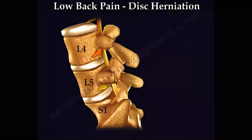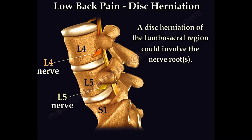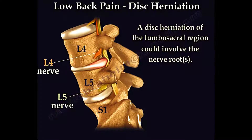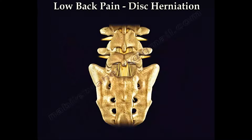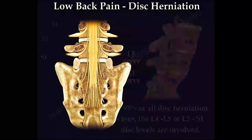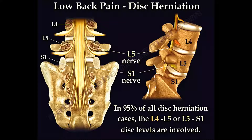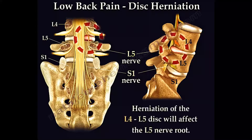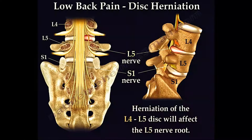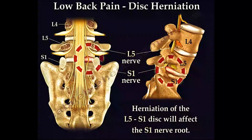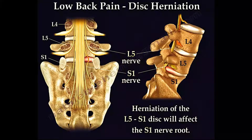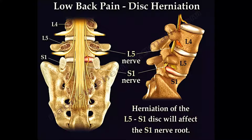A major disc herniation of the lumbar sacral region could affect the nerve roots. In about 95% of all disc herniation cases, the L4-L5 or L5-S1 disc levels are involved. Herniation of the L4-L5 disc will affect the L5 nerve root, and herniation of the L5-S1 disc will affect the S1 nerve root.